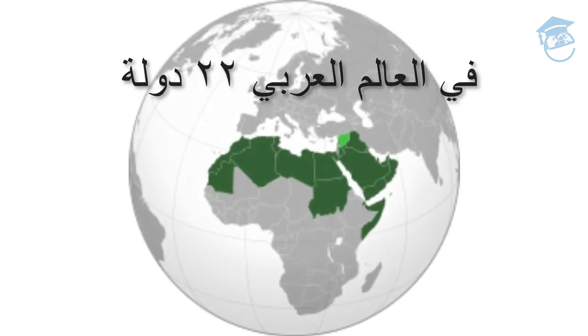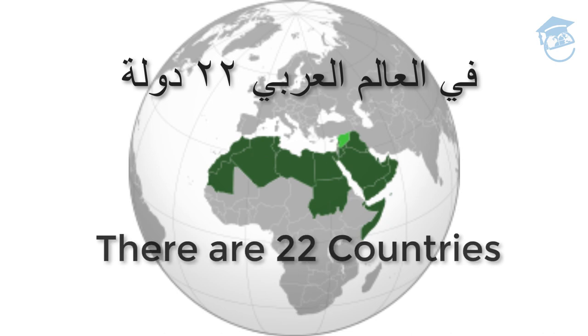In the Arab world, there are 22 countries. 12 countries in Asia, and 10 countries in Africa.